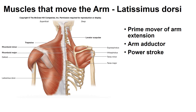The latissimus dorsi are muscles that help to move the arm, found on the posterior side of the body. These are superficial muscles that are broad and triangular shaped, located on the inferior part of our back. Commonly known as our lats, they are also referred to as our swimmer's muscle because many of their actions are required for swimming strokes. This muscle is the prime arm extensor, but it also helps with adduction and medial rotation of the arm.